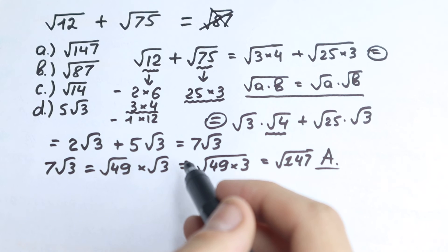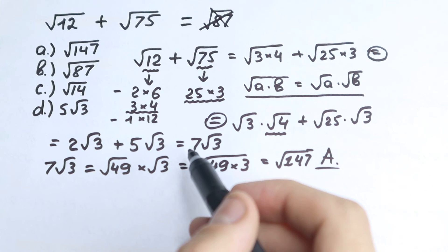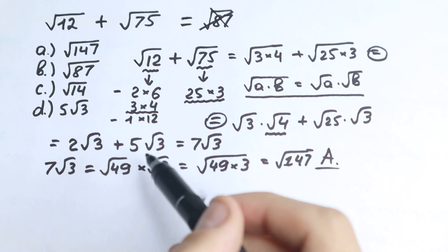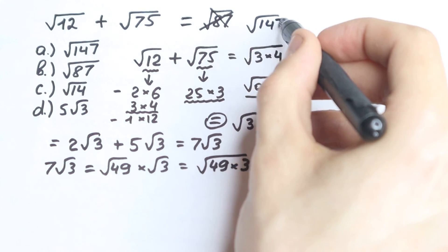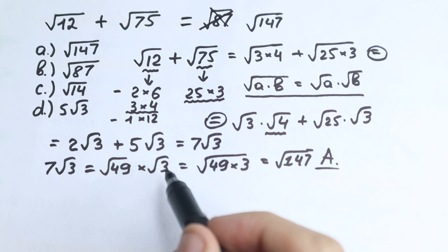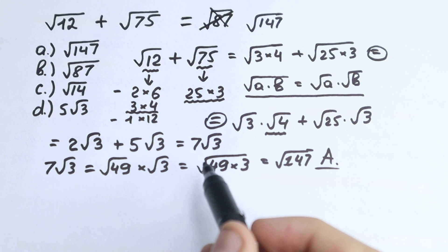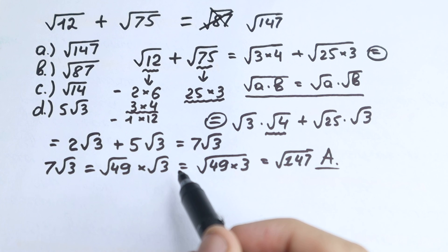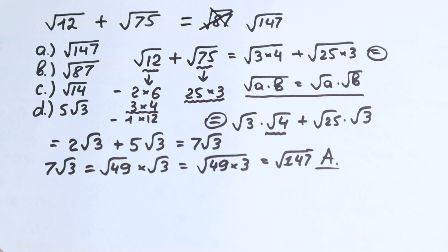This is an easy question for most of you, but I hope you understand my thinking and learned something new — that's my main goal. A lot of students make this mistake, so I wanted to record this video. Our answer is square root of 147. I hope you understood my explanation and enjoyed this video. Please leave a like and write a comment — it really helps me improve and make more videos. Thank you for your time and have a great day — I wish you all the best and see you in the next video!